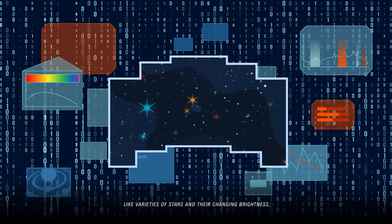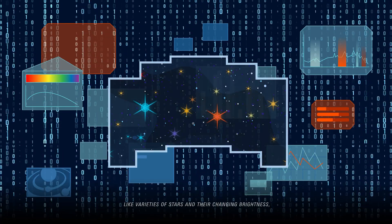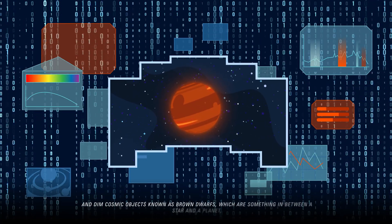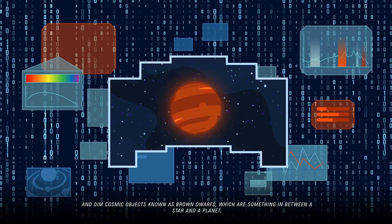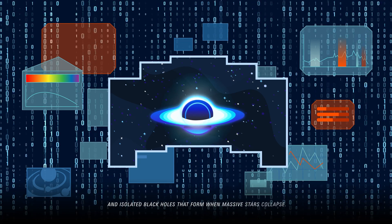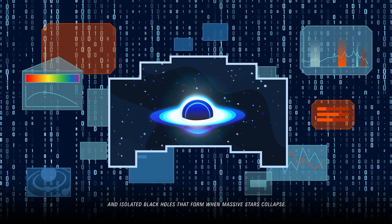Like varieties of stars and their changing brightness, and dim cosmic objects known as brown dwarfs, which are something in between a star and a planet, and isolated black holes that form when massive stars collapse.